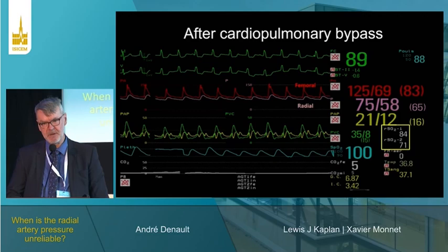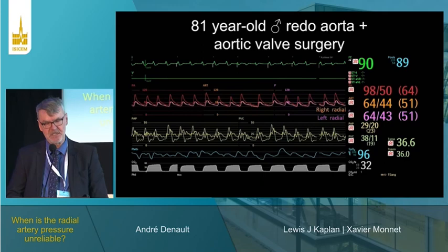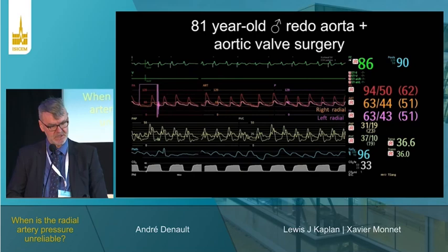This is another case — a patient undergoing aortic surgery — in which we used two radial arteries. You can see the significant difference between the femoral and the two radial artery pressures in this situation.